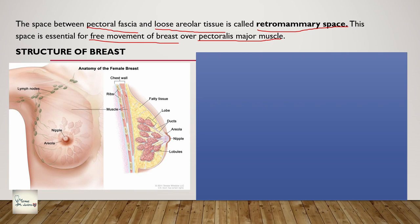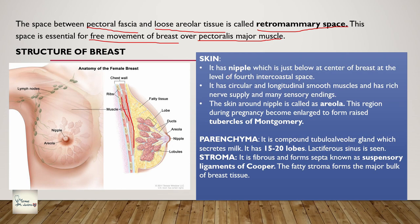Here is the pectoralis major muscle, the pectoralis minor, and external intercostal muscles. The nipple is just below the center of the breast - it is not exactly at the center - and it is at the level of the fourth intercostal space. The nipple has circular and longitudinal muscles and has enriched nerve supply with many sensory endings. The skin around the nipple is called the areola, and during pregnancy this region becomes enlarged, forming something called the tubercles of Montgomery.